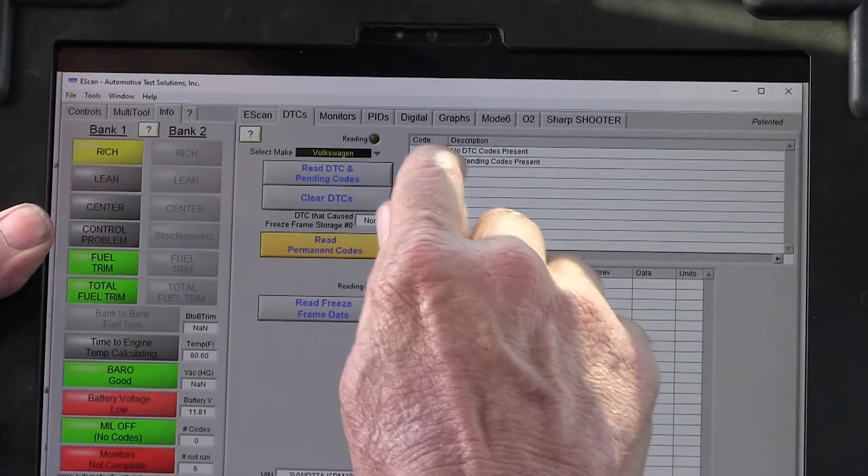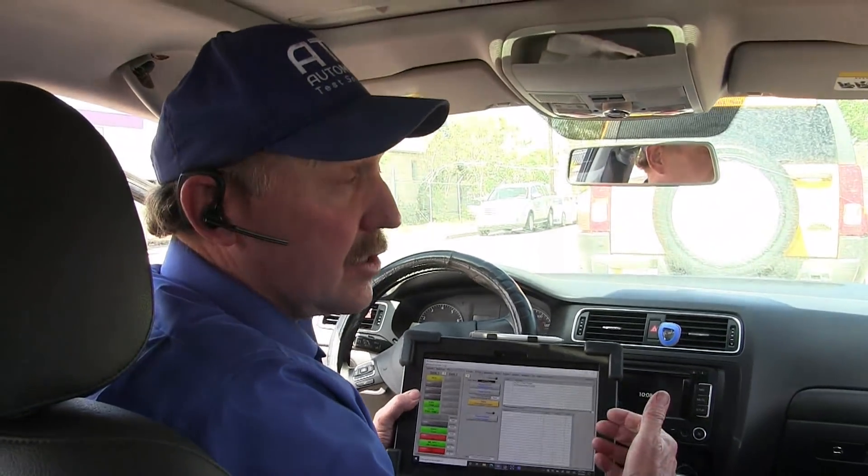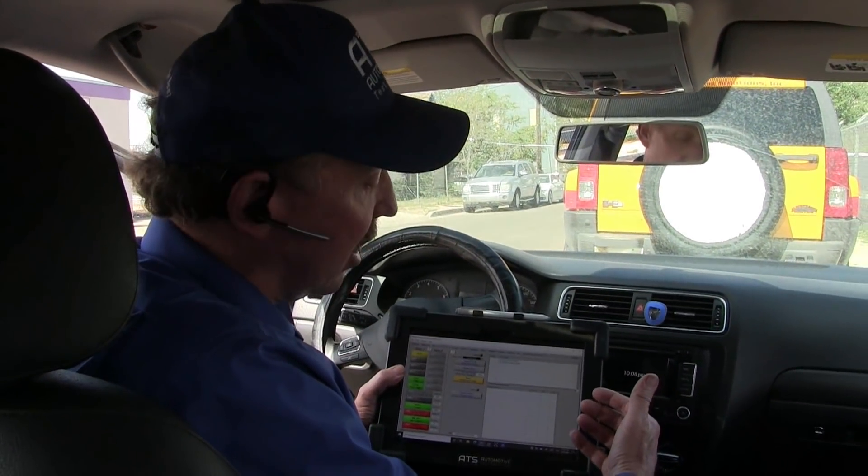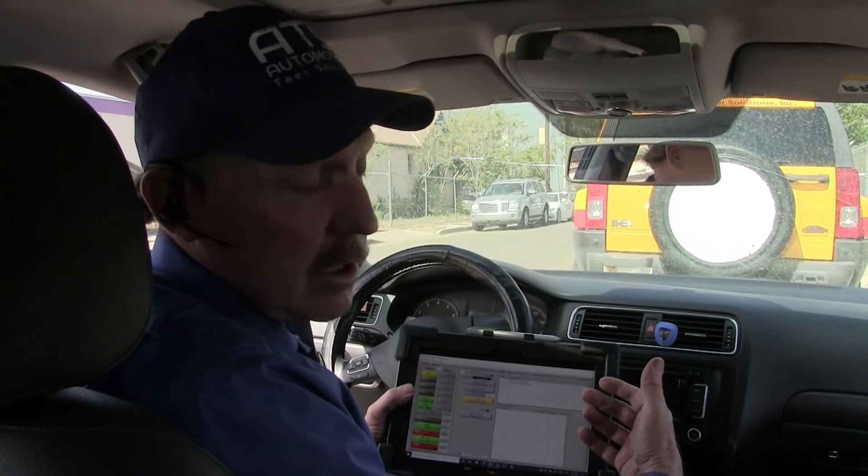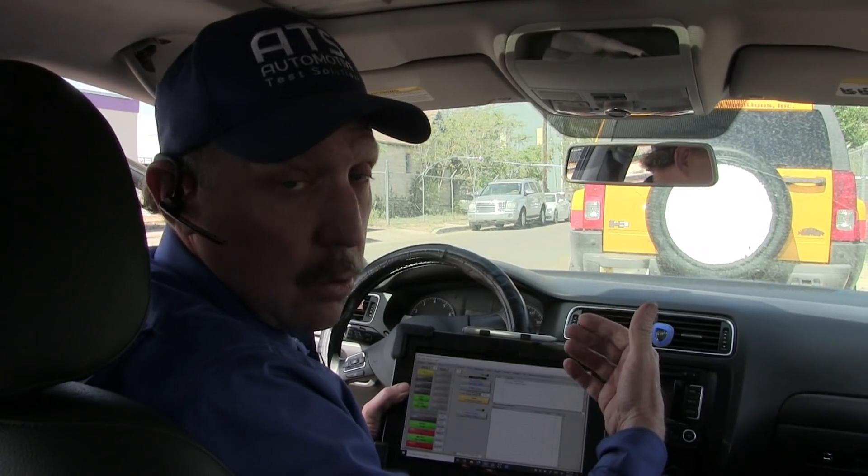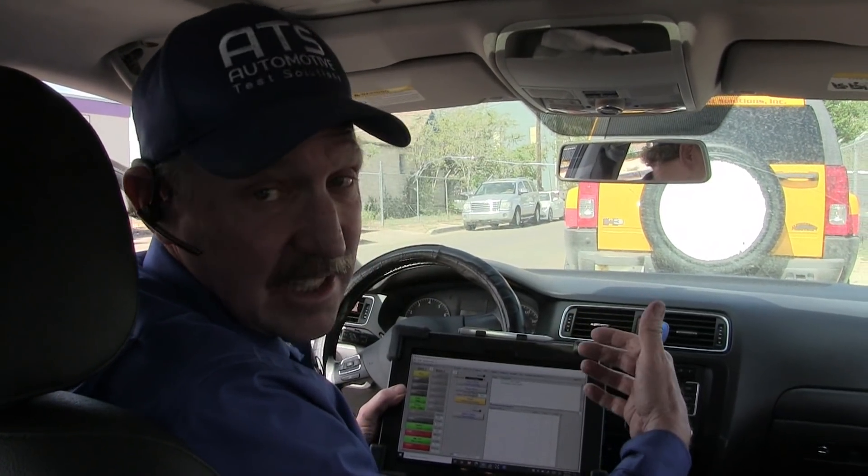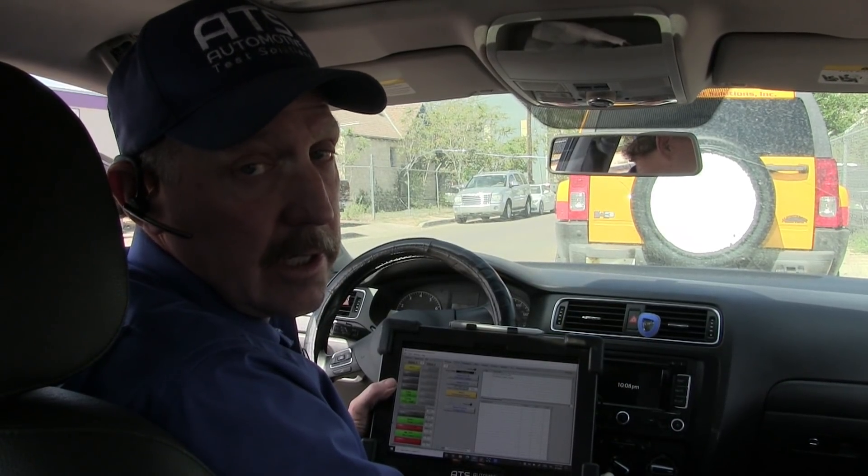The DTCs we have right here, there aren't any so we really aren't going to have any help from Mode 6 or code bases in this car but we know it stalls and we know it stalls when it's cold. So what I want to go ahead and do is I want to get an oscilloscope connected to this vehicle so if we start it and it does stall we can try to see what caused the stall.